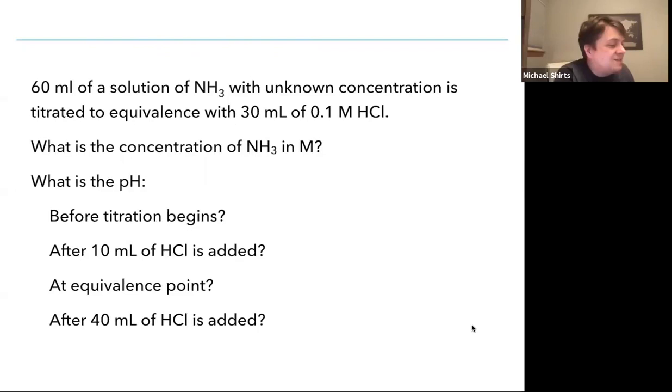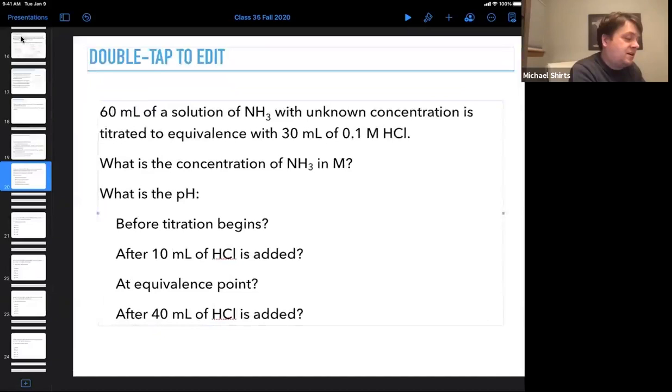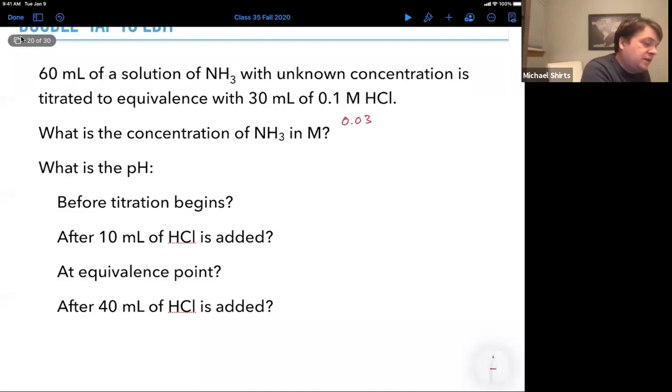This time, let's say we have 60 mL of a solution of ammonia with unknown concentration, and it's titrated to equivalence with 30 mL of 0.1 molar HCl. The first thing we have to do is figure out how much ammonia there is. It's a titration, we know what the equivalence point is. So we need to figure out how much acid there is: 0.03 liters times 0.1 moles per liter, that gives 0.003 moles HCl. That's the same as the amount of ammonia, 0.003 moles of ammonia.